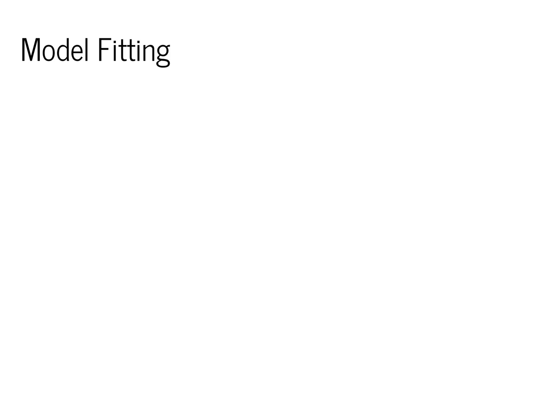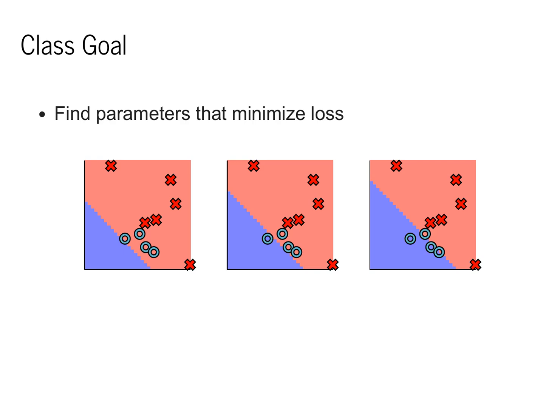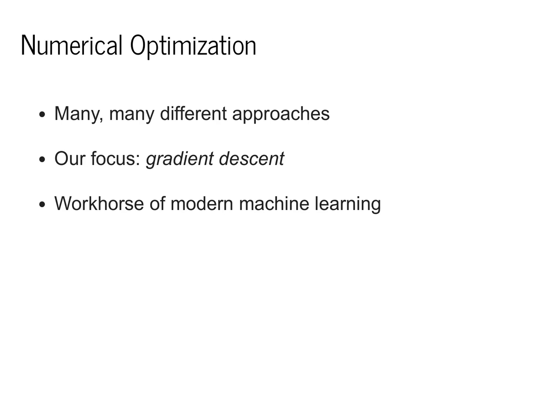As I mentioned earlier, the core focus of today's class is model fitting. If you remember from last class, our goal was to choose the parameters of the model to separate out the blue and the red points. We defined a loss function, which told us how well we were doing. It told us, for instance, that the point on the right, which corresponds to one setting of parameters, is better than the graph on the left. We're going to be trying to find the best set of parameters to minimize our loss.